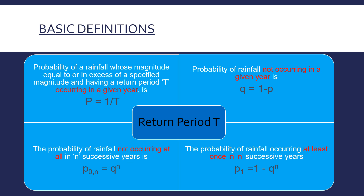A rainfall is often defined in centimeters or millimeters — like 10 centimeters of rainfall or 100 mm of rainfall. This is how we define a rainfall.